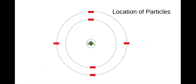Let's talk about where the location of the particles are. We have the center part called the nucleus, and inside the nucleus we have protons and neutrons. Our protons are positive and our neutrons are neutral, so our nucleus has an overall positive charge.